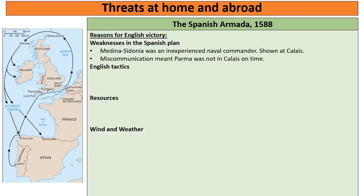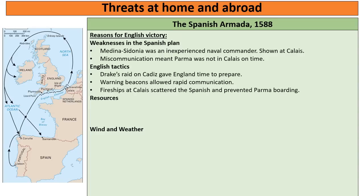Weaknesses in the Spanish plan: Medina Sidonia was an inexperienced naval commander who only got his position because he was a lord, not because he was a skilled captain. We see this at Calais when he panics and the Spanish ships scatter. Also, a failure to communicate effectively meant that Parma and his army were not in Calais on time ready to embark. English tactics also played a role: Drake's raid on Cadiz in 1587 gave England a full year to prepare, warning beacons allowed rapid communication, and the use of fire ships at Calais was ingenious and scattered the Spanish, preventing Parma from boarding.